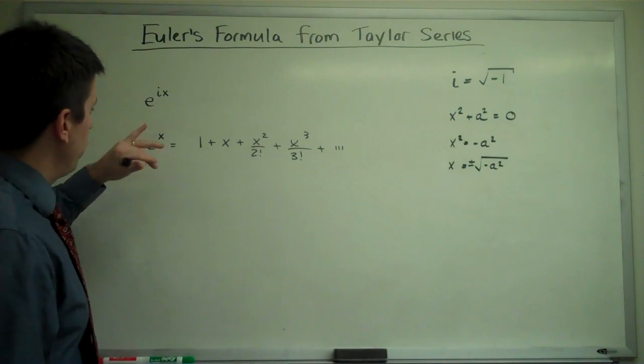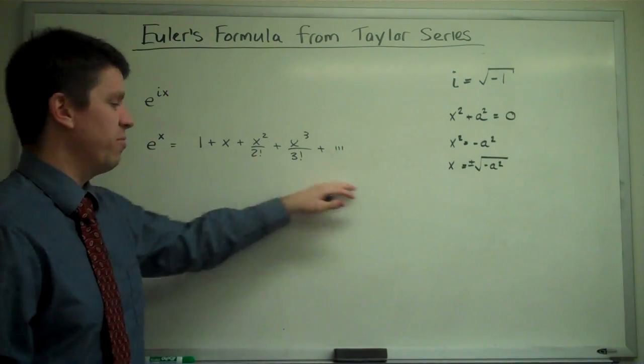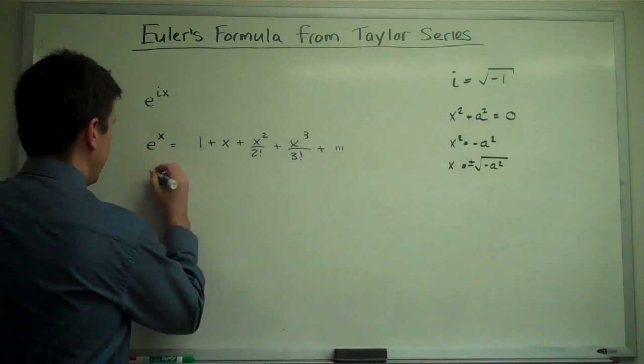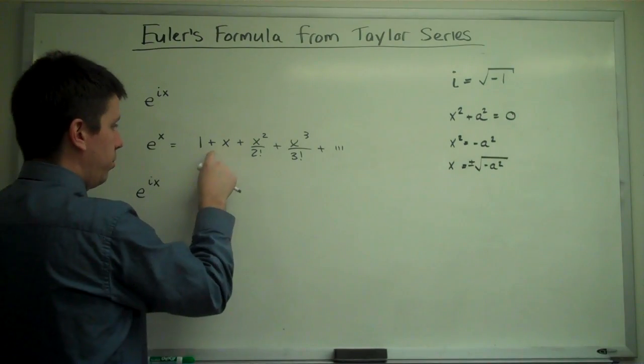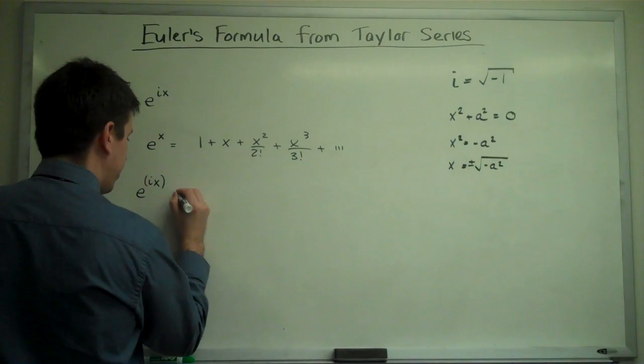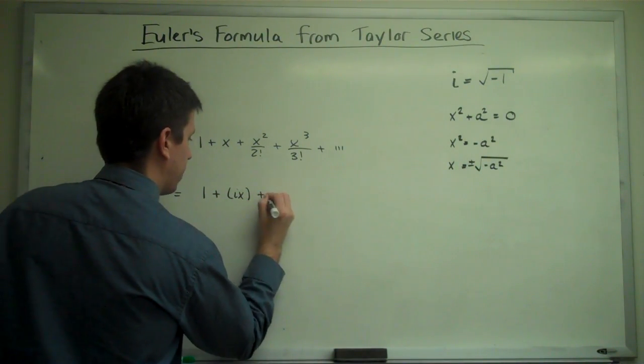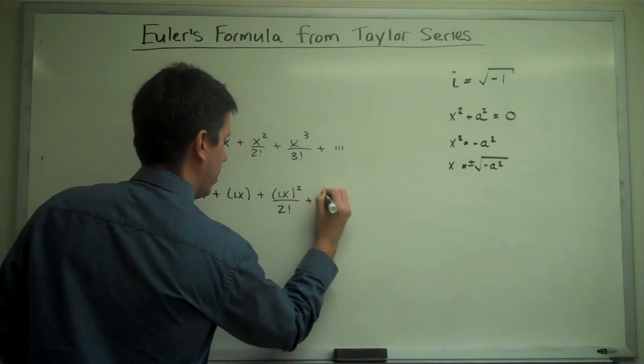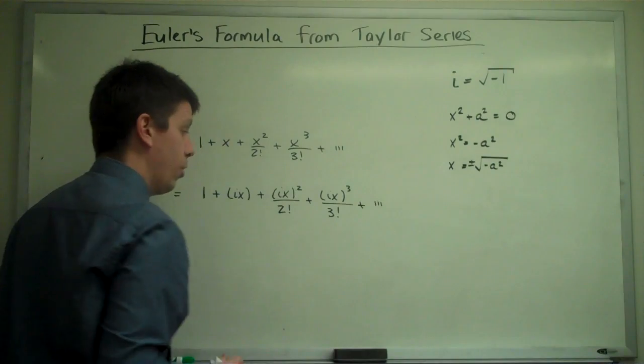So I don't know yet what this means, but I can turn this function, e to the x, into a sum of polynomial terms. Let me just take the argument up here and plug it in and see what we get. So if e to the x is 1 plus x plus x squared plus x cubed and so on, then e to the i x must be 1 plus i x plus i x squared over 2 factorial plus i x cubed over 3 factorial and so on.